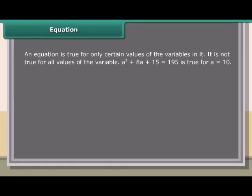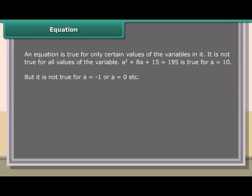Equation: an equation is true for only certain values of the variables in it; it is not true for all values. For example, a² plus 8a plus 15 equals 195 is true for a equals 10, but it is not true for a equals minus 1 or a equals 0.